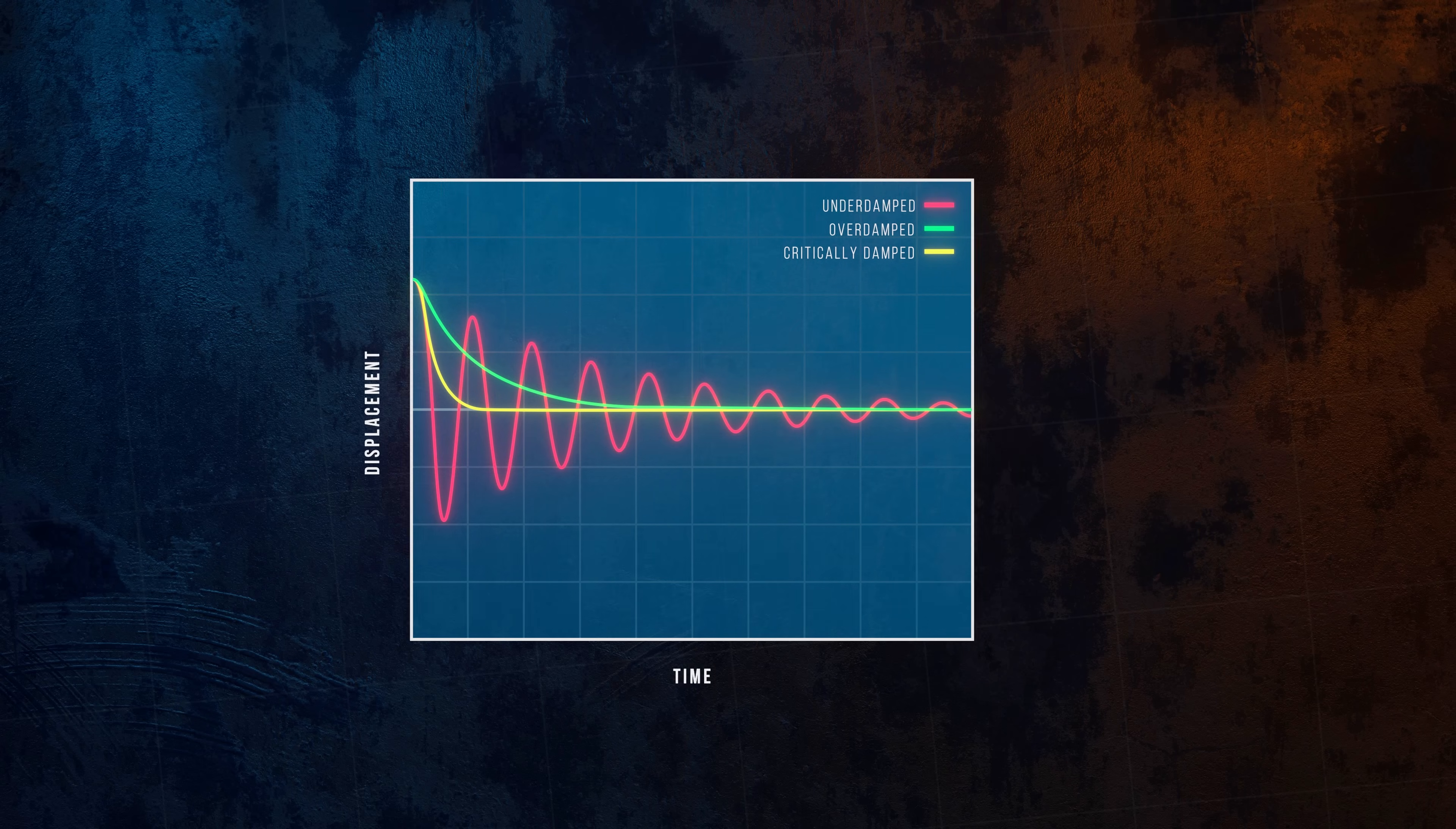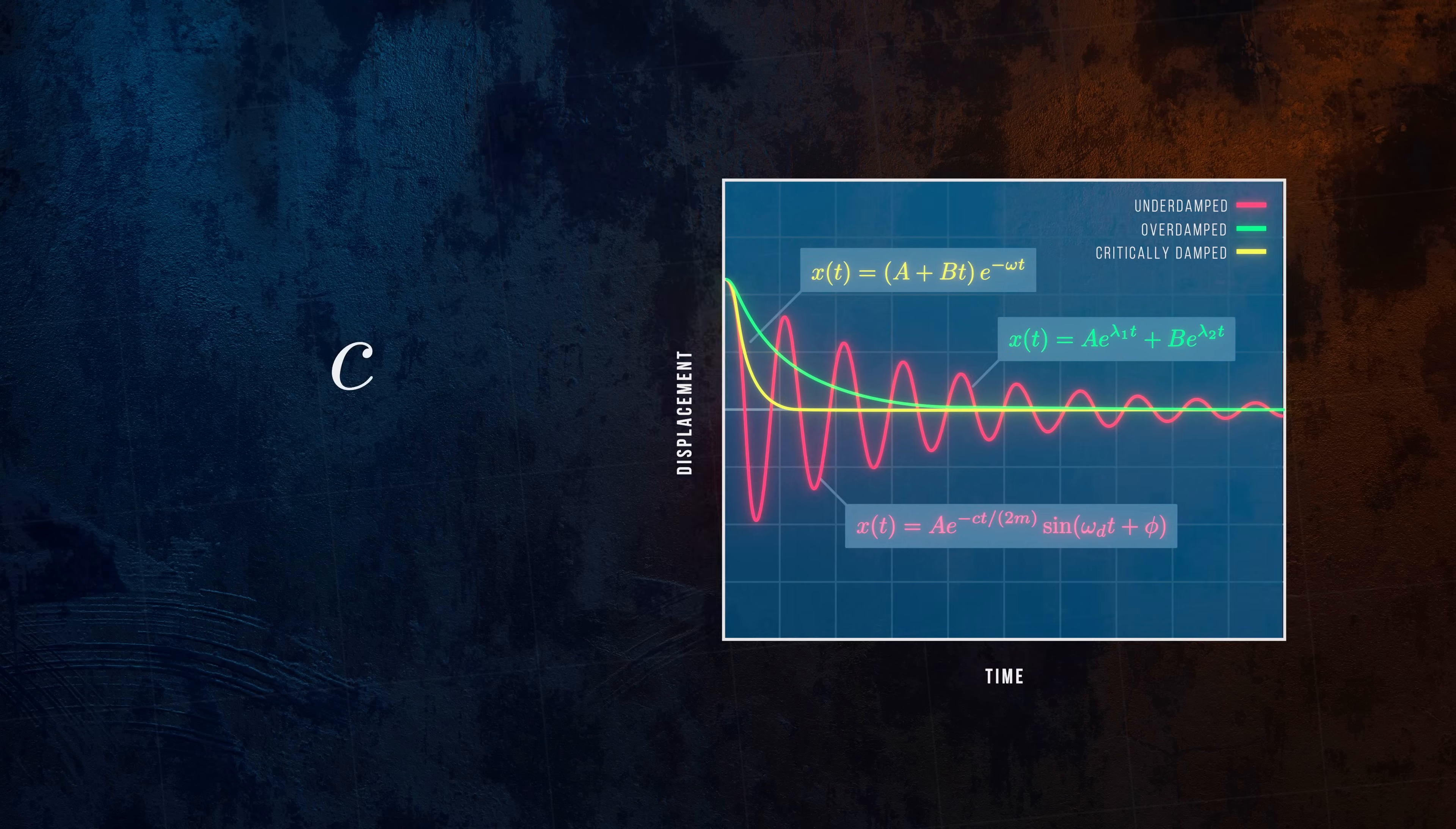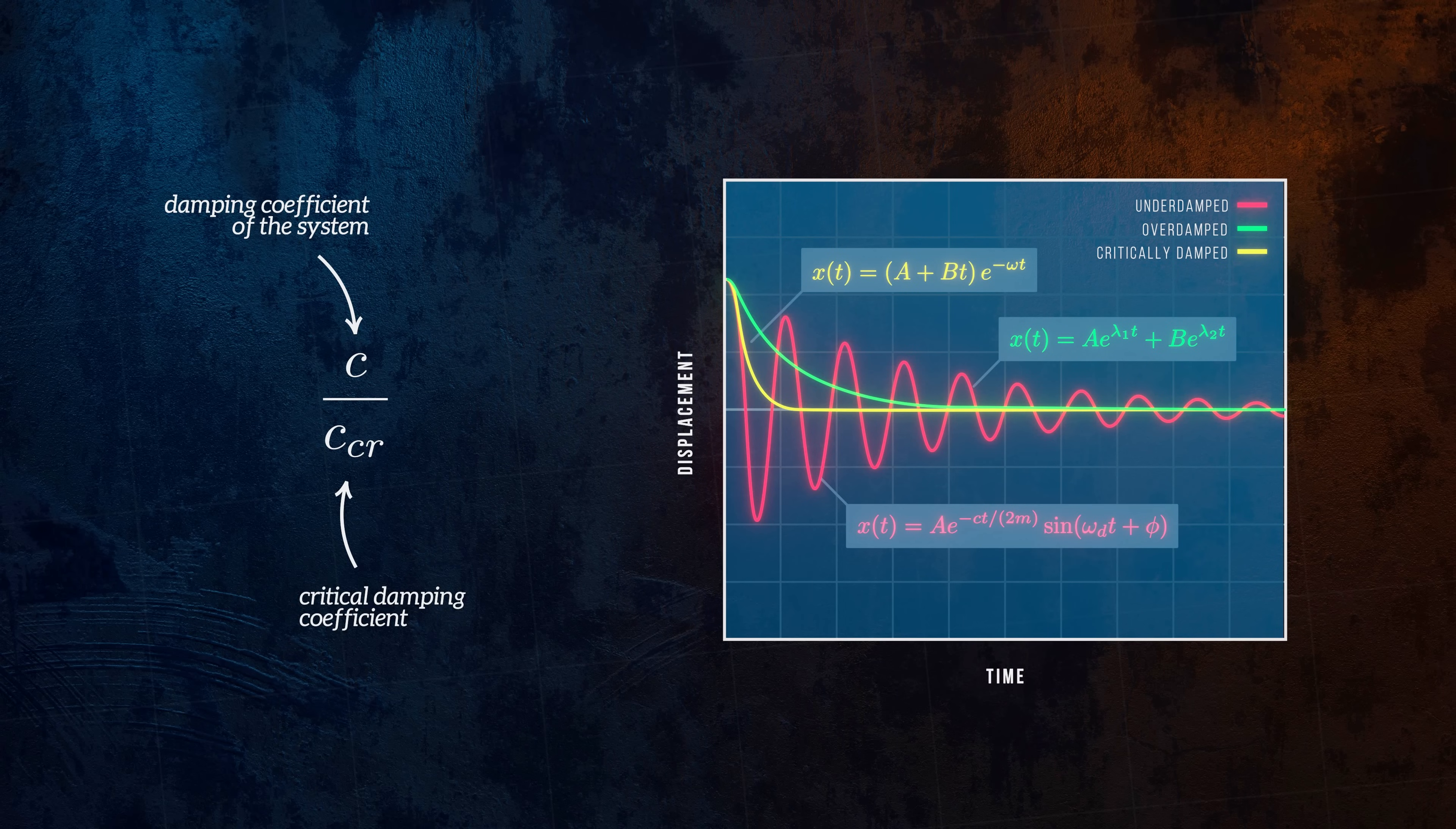Each of these cases has a different function that defines the displacement of the system, obtained by solving the equation of motion. The ratio of the actual damping coefficient of the system to the damping coefficient that would result in a critically damped response is the damping ratio.